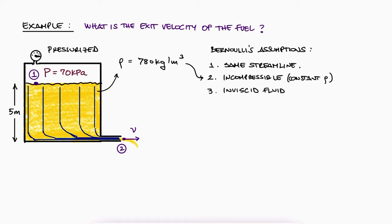We solve for V2, and by substituting the values for g and the fuel's density, we find that the exit velocity is 16.66 meters per second. Notice that the exit hole can be at the end of a hose that first goes up out of the tank, and as long as the exit hole's location is at the same Z2 value, the speed would still be the same. This concept is elaborated in one of the two-minute examples linked in the description below.